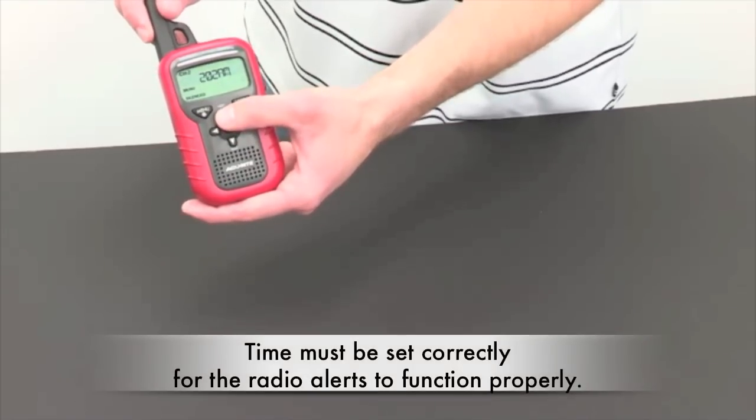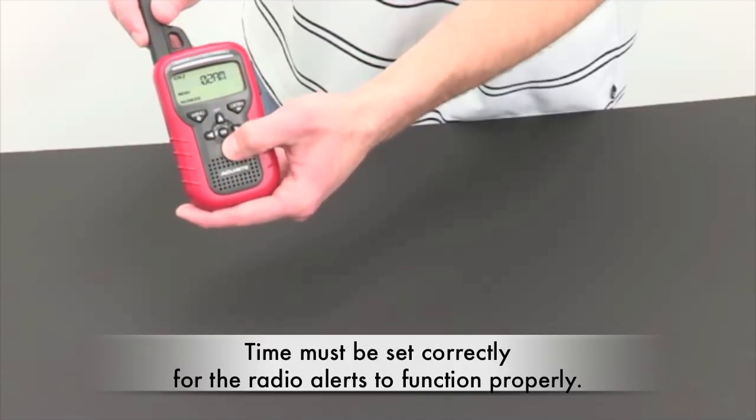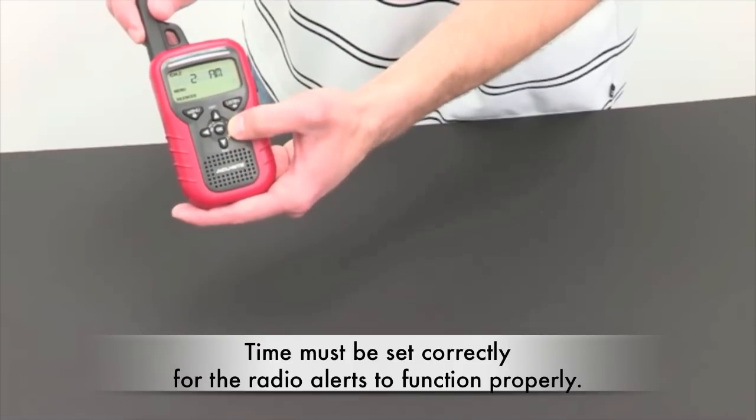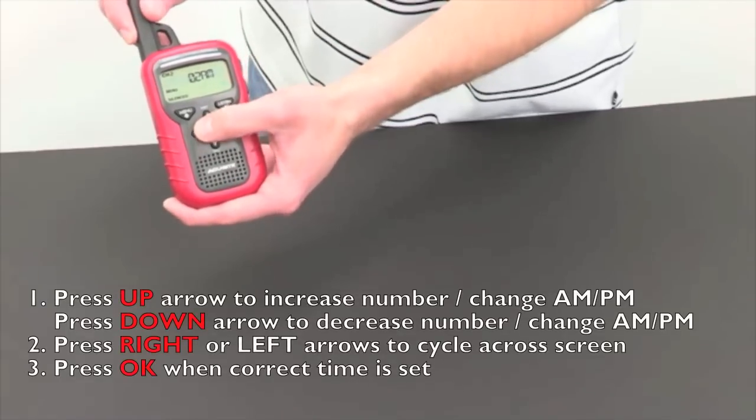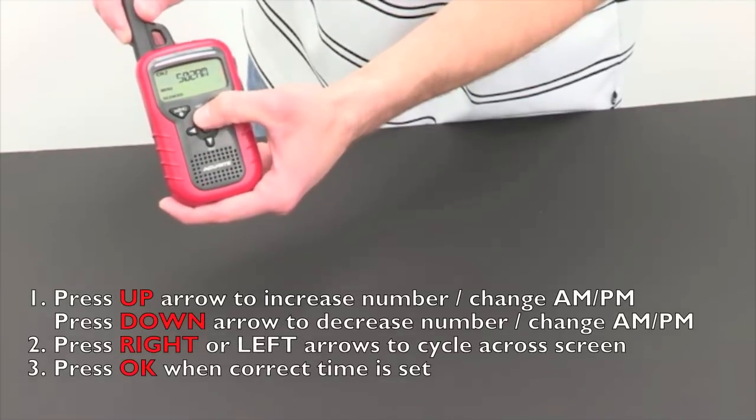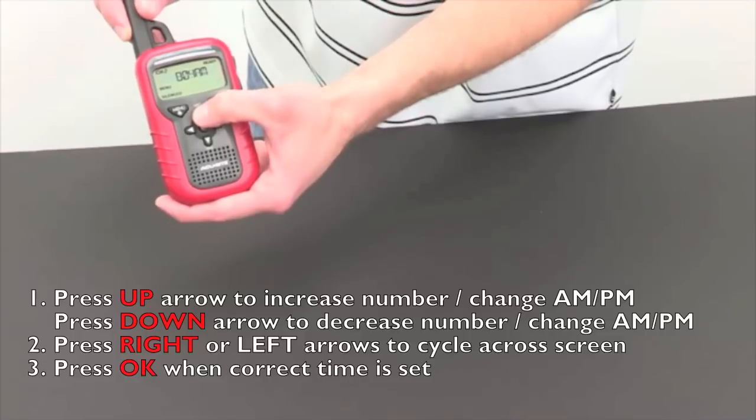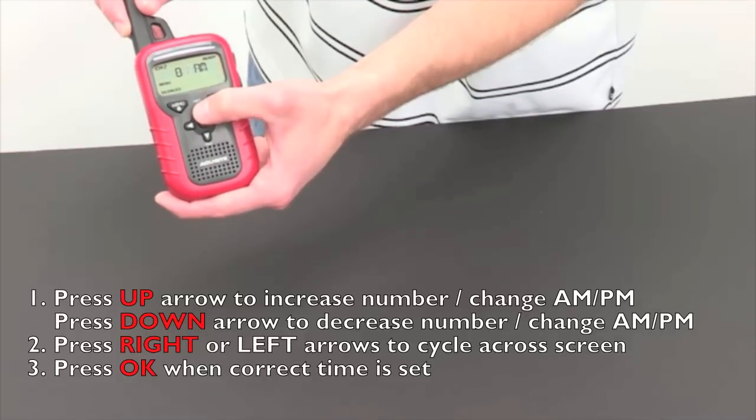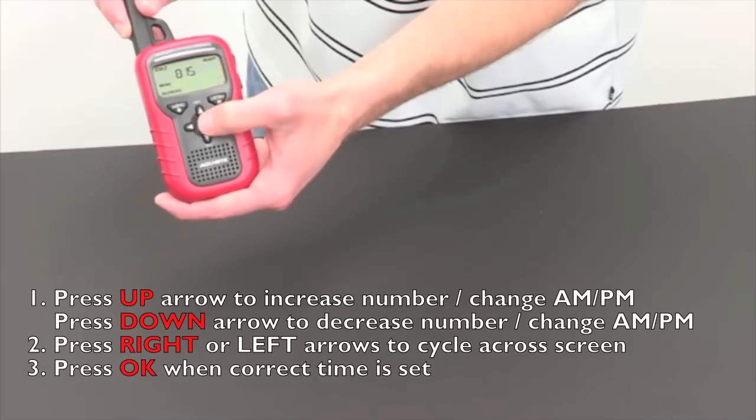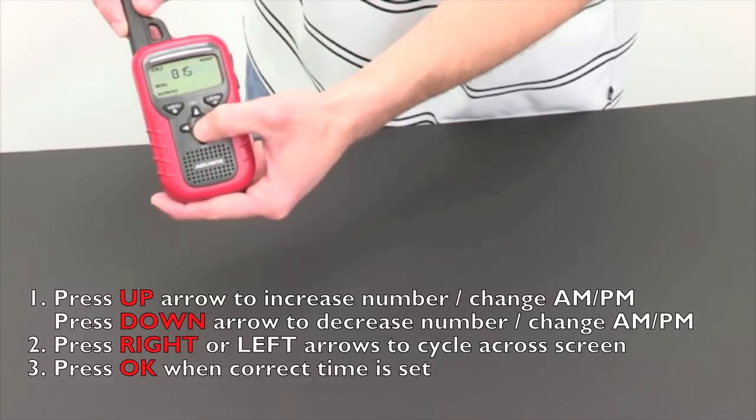Enter the current time using up and down to increase the numbers and left and right to cycle through. Then press ok when completed.